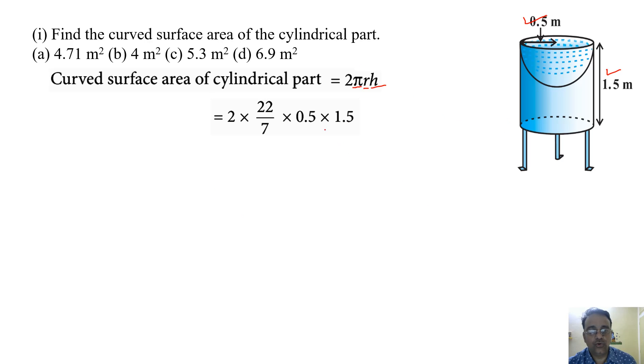Here 2 × 0.5 will become 1 and 22 × 1.5 will become 33. So 33 divided by 7 is approximately equals to 4.71 meter square. So the correct answer is a, that is 4.71 meter square.